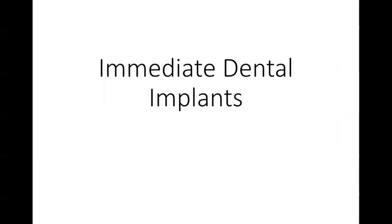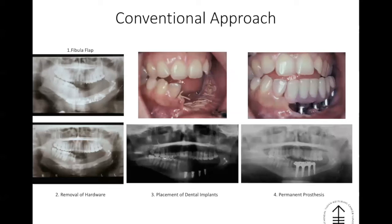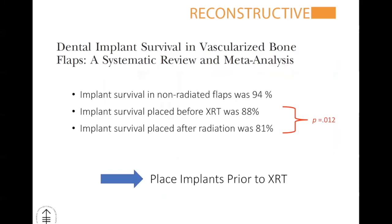Let's talk about immediate dental implants. The conventional approach is a lengthy process: a patient undergoes a fibula flap, hardware is later removed, and dental implants are placed in a delayed fashion with permanent prosthesis later on. There is a big hesitancy among dentists to place dental implants once a patient has been radiated. We've performed a meta-analysis proving that placing a dental implant into a radiated fibula has a lower success rate than placing into a non-radiated fibula. Therefore, at our center, prosthodontists are reluctant to place dental implants in radiated patients.